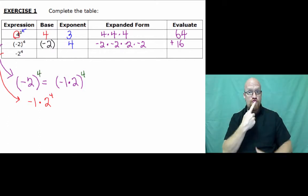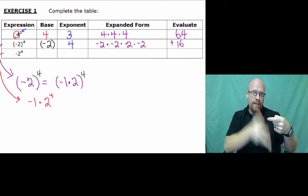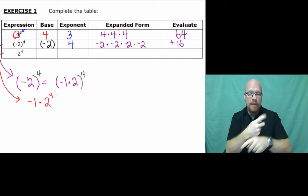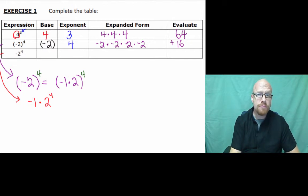Now, look at the red one here, negative 1 times 2 to the fourth, which I'm going to say is separate. So, negative 1 is out by itself. Then, we multiply it by 2 to the fourth power, which equals negative 16.